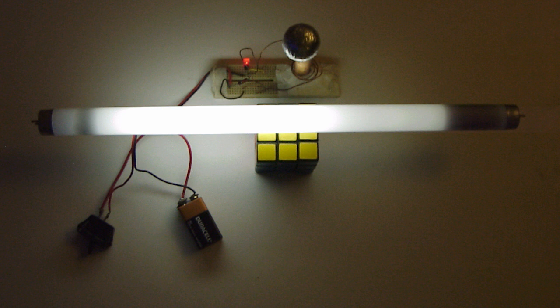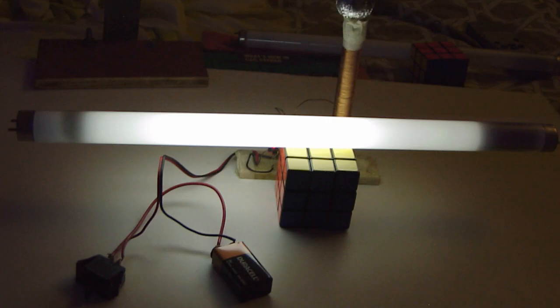But my Tesla coil doesn't know that. Actually, there is a good reason why the Tesla coil lights them. These bulbs work by heating up mercury, making it a gas, and then bombarding the mercury gas with electrons, which causes the mercury to emit ultraviolet light.